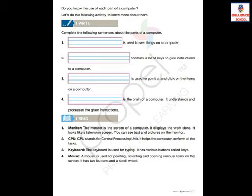Mouse: a mouse is used for pointing, selecting, and opening various items on the screen. It has two buttons and a scroll wheel. We use the mouse to point at, select, and open different items shown on the monitor. A mouse has two buttons — right and left — and a scroll wheel in the center.